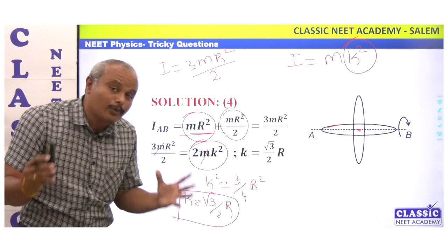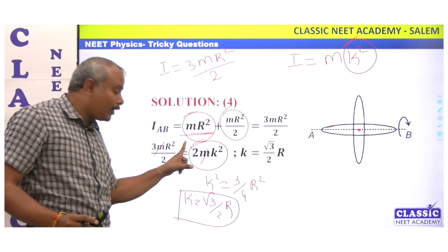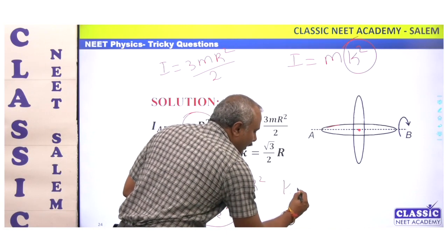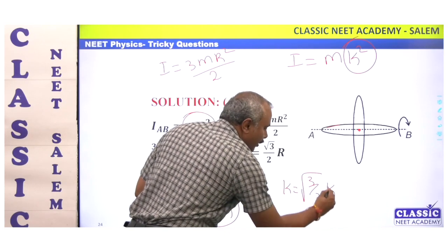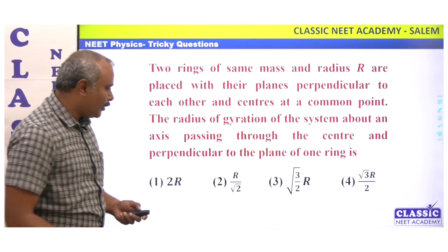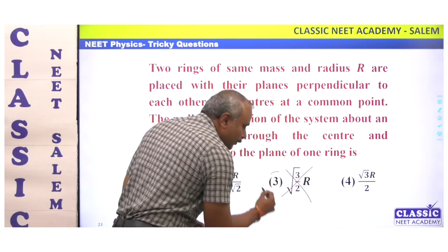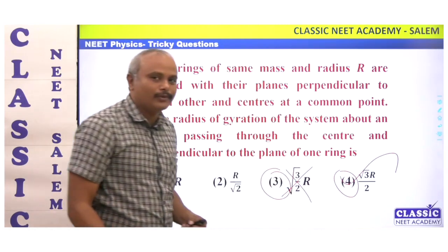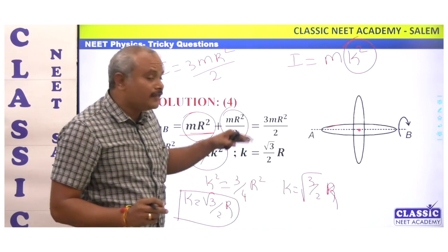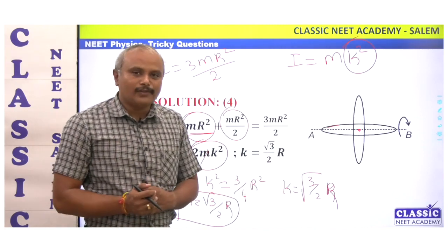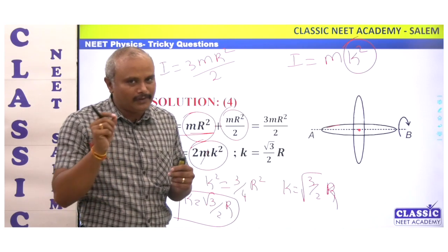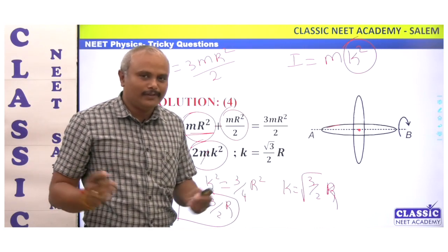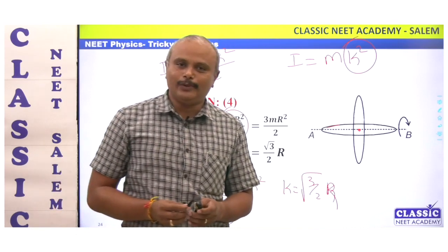So for this question, if you know the trick — I equals mk² — you get k equal to √3/2 × r. That is the answer. This is the little trick. If you have a little bit of advice in physics, it is easier. All the best, we will meet in the next question. Thank you.